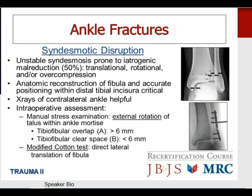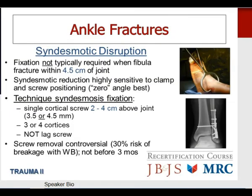When the distal fibula fracture is within 4.5 centimeters of the tibial plafond, syndesmotic fixation is not typically required. When fixation is required, the zero-angle clamp and screw positioning is appropriate. Technique: a single cortical screw placed through the lateral malleolar plate two to four centimeters above the joint — either a 3.5 or 4.5 screw, three or four cortices, but not a lag screw to avoid over-compression. The issue of screw removal is controversial: there is about a 30% risk of breakage if left in place once the patient resumes weight-bearing. If the screw is to be removed, it should not be done earlier than three months post-operatively.